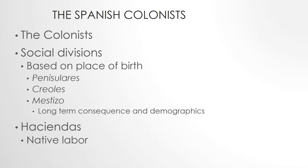One thing I'll note about the Spanish colonies is that part of your social division, your socioeconomic place, was determined by your place of birth. The peninsulares — those born on the Iberian Peninsula in Spain — have the top position. Creoles are those of Spanish descent born in the Americas, so they're looked at as a little less. One thing you get in the Spanish colonies that you never really get in the English colonies is intermarrying and interbreeding between the native populations and the Europeans. Those offspring are called mestizo.